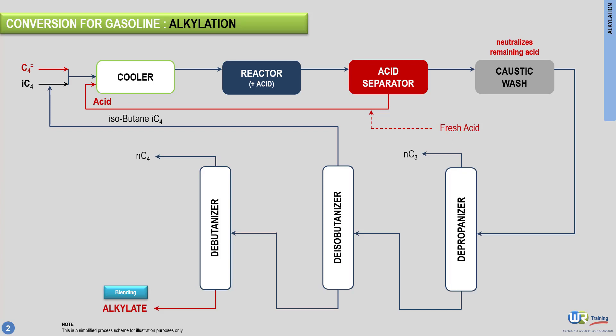So this was a simple overview of the alkylation process used in refineries to maximize the production volume of gasoline. In the next section, we will see the third conversion unit used for gasoline, which is called catalytic reforming.